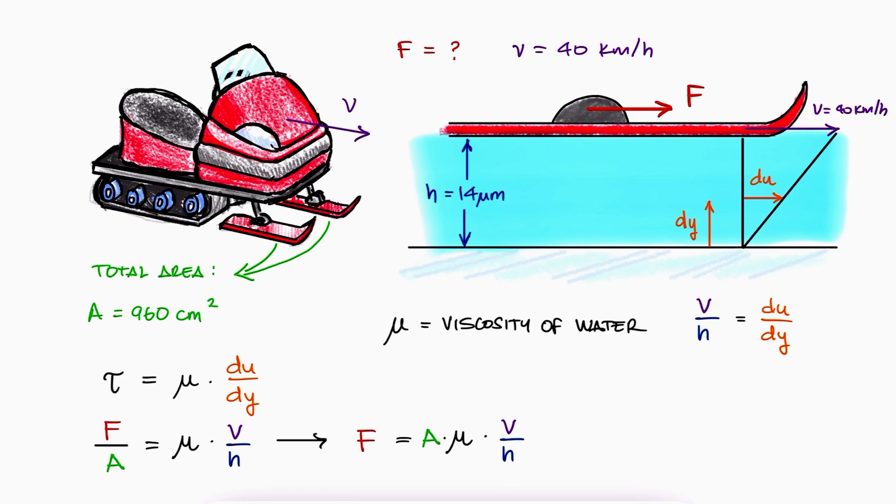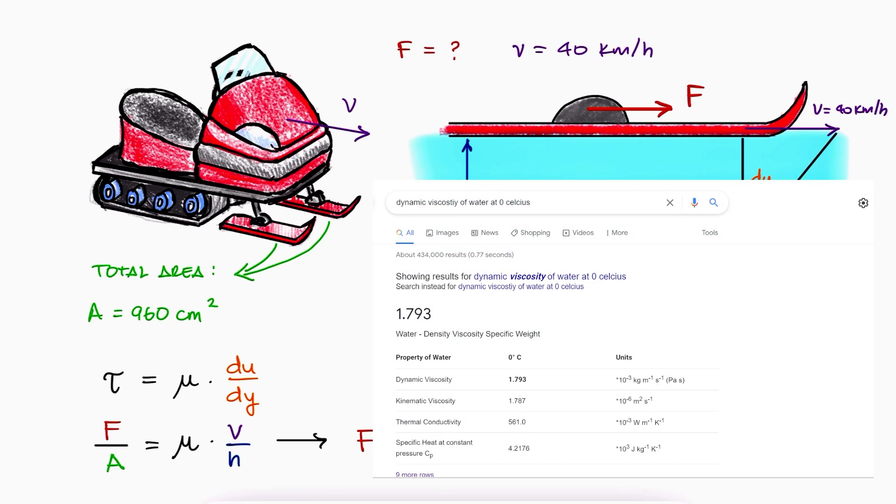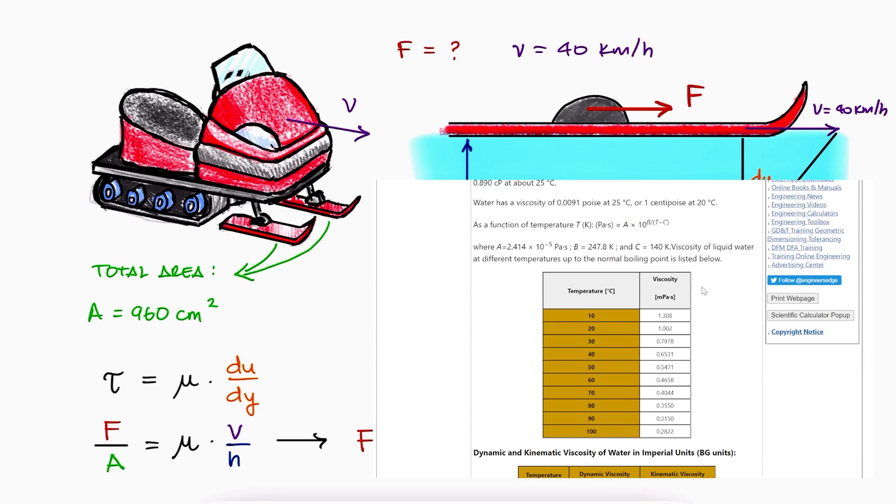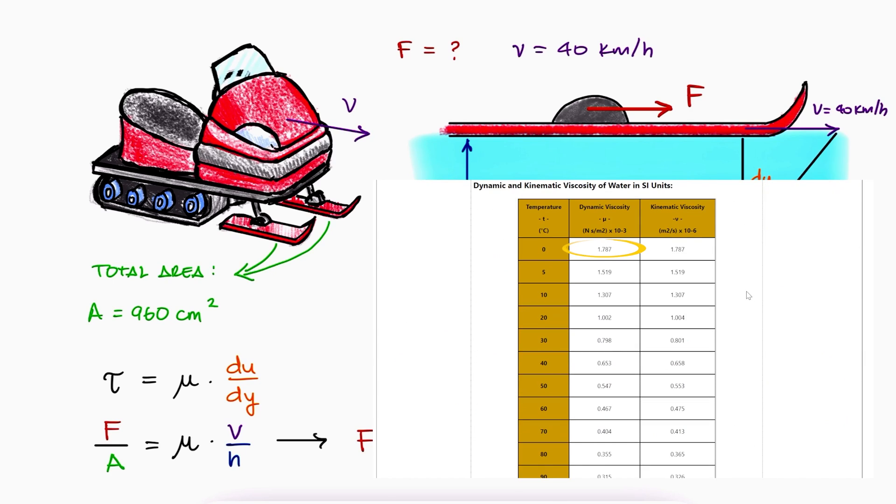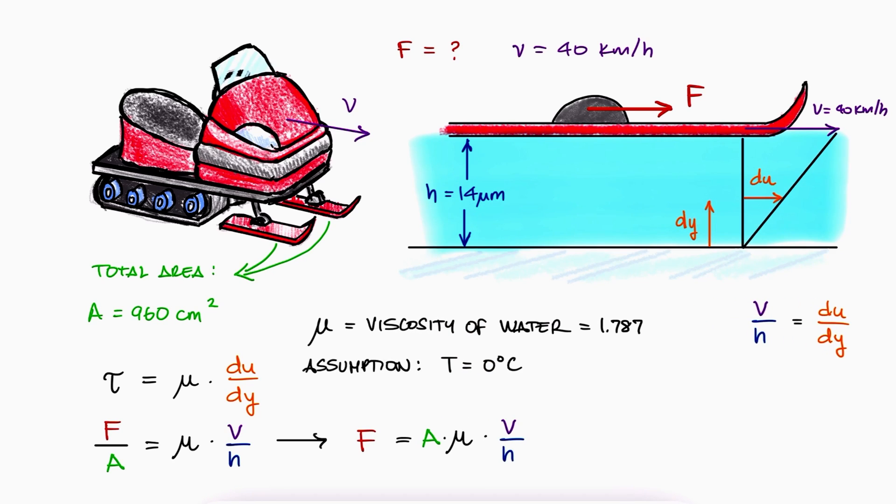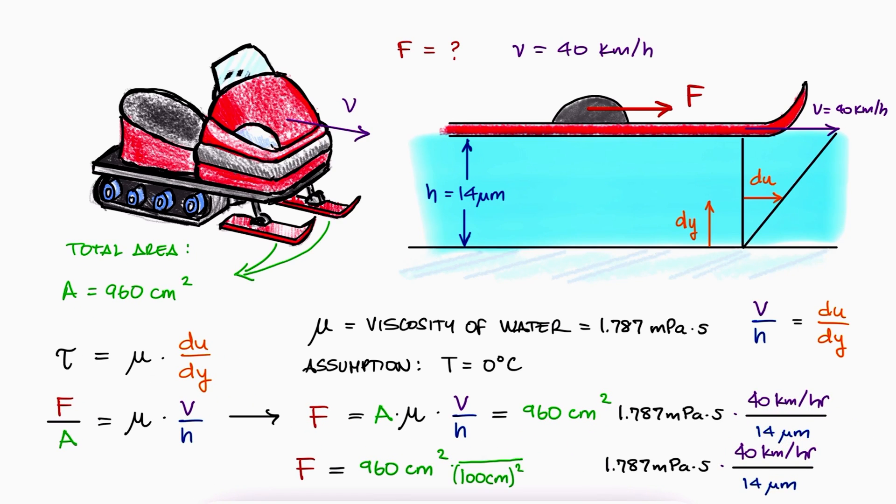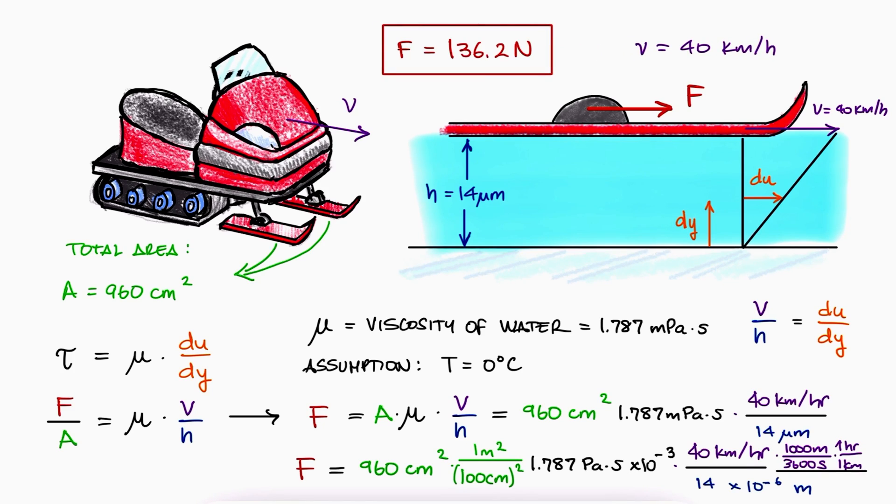Since we know that viscosity is a function of temperature, we can assume that the temperature of that water is near zero degrees Celsius. We look up the dynamic viscosity of water at 0°C and find it to be 1.787 mPa·s. With this value, we substitute the values, carry out necessary units conversions, and find the necessary force to be 136.2 N for the snowmobile to maintain its 40 km/h speed.